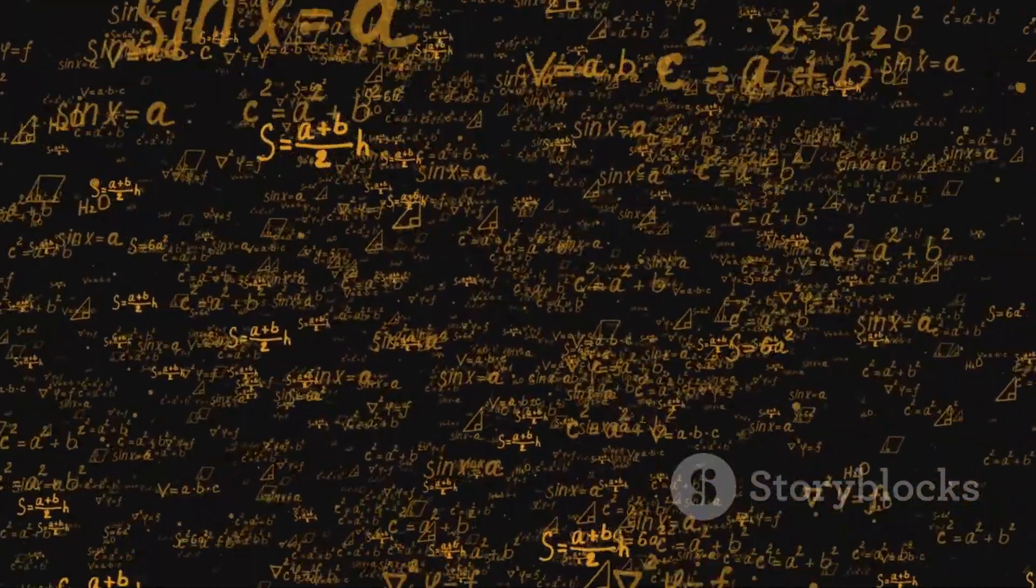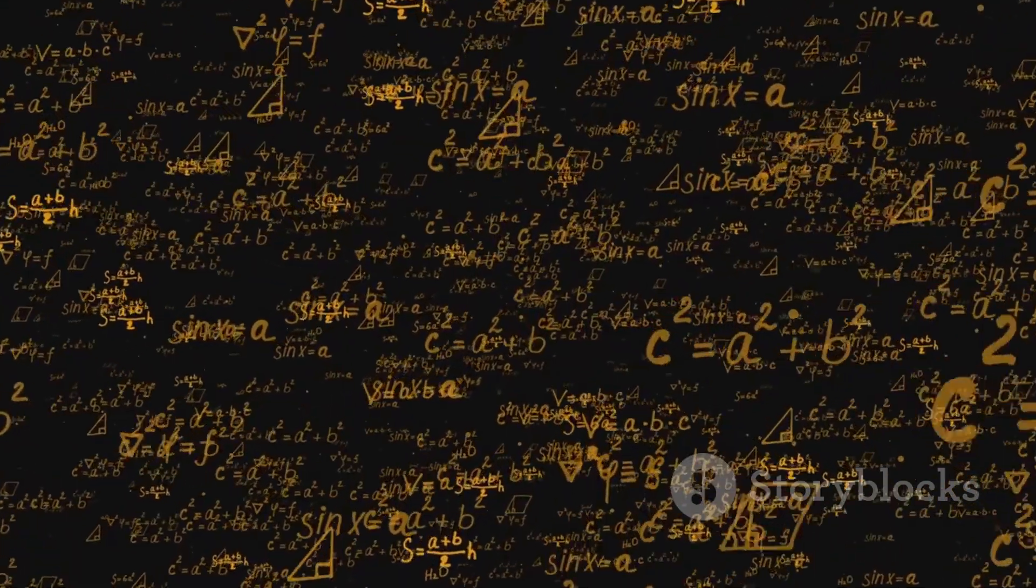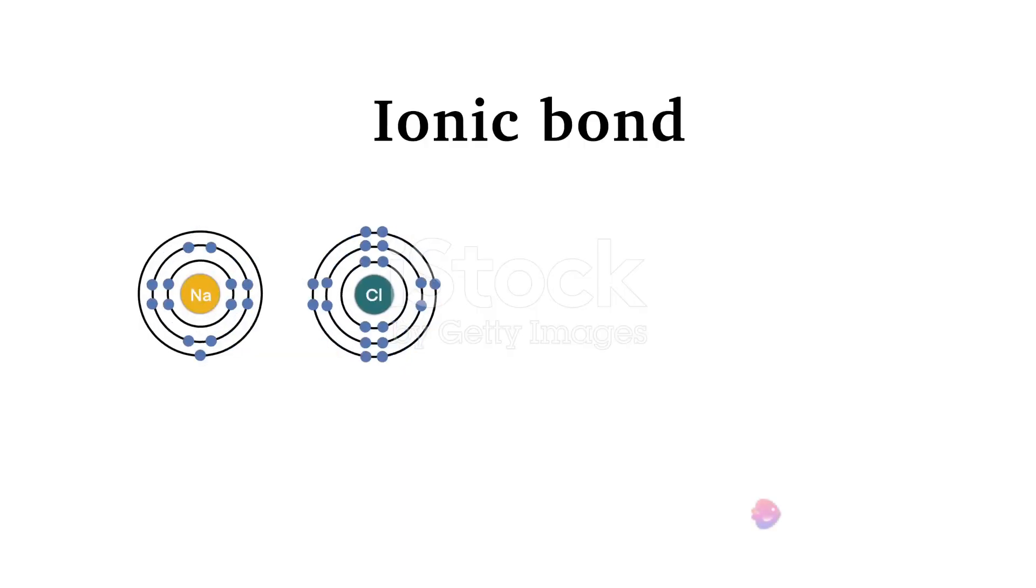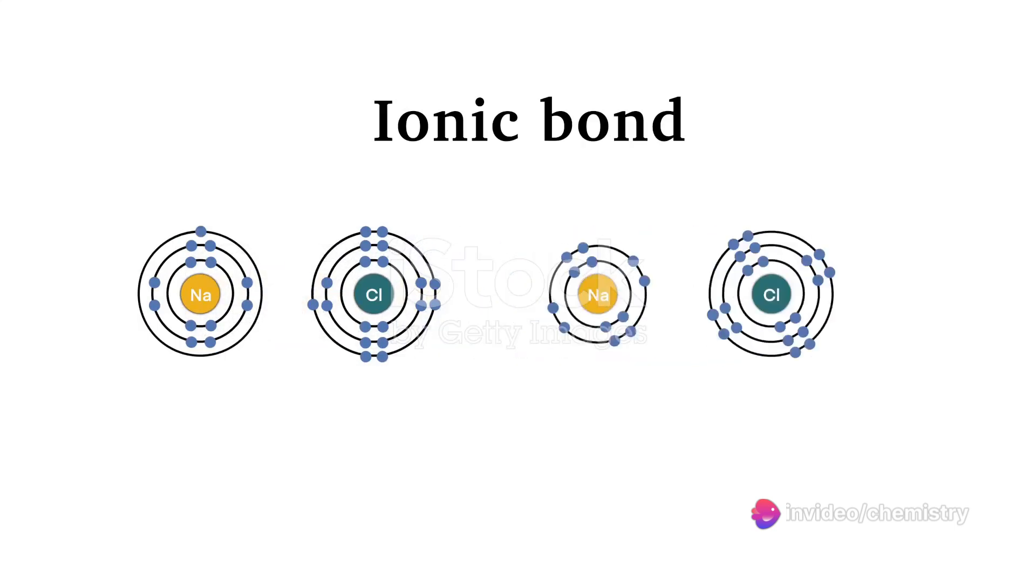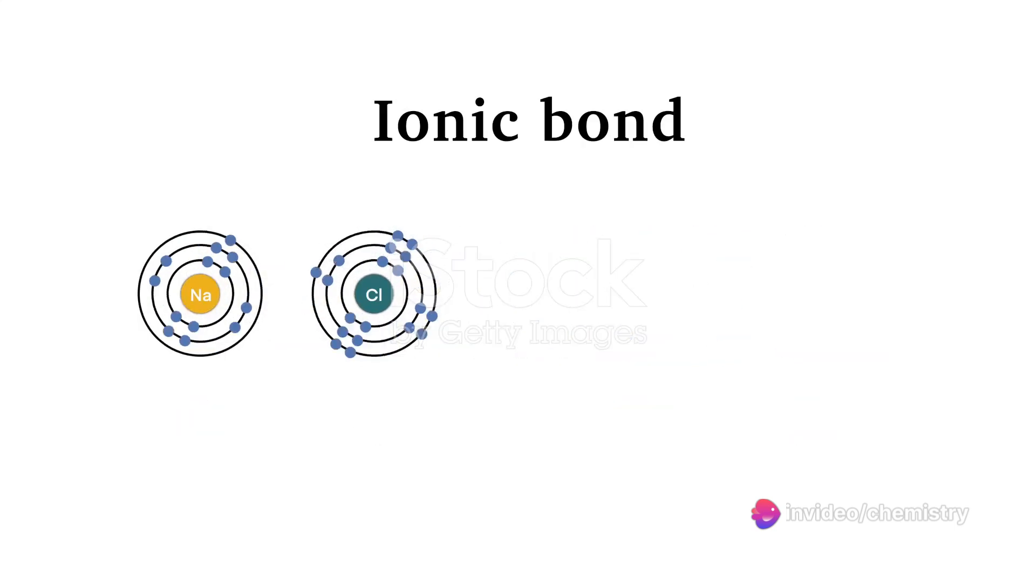Next, it's essential to understand how these symbols connect. Lines drawn between symbols represent chemical bonds, the glue that holds atoms together. A single line indicates a single bond, two lines signify a double bond, and three lines denote a triple bond.